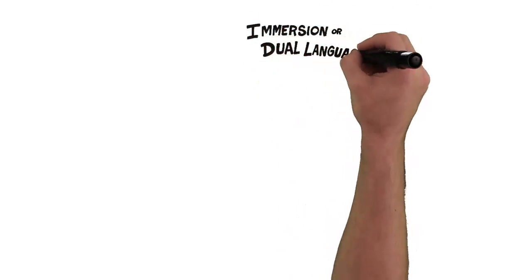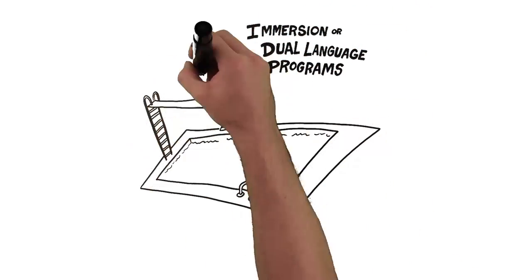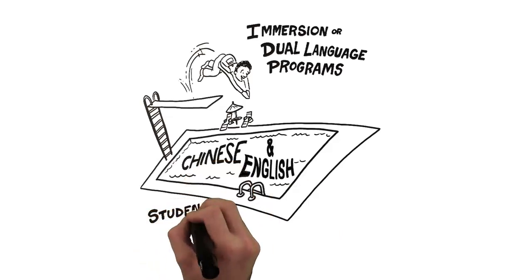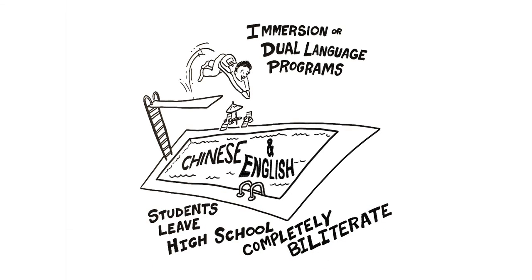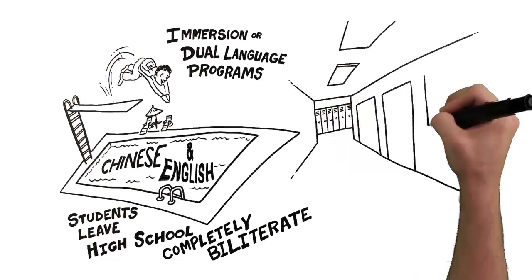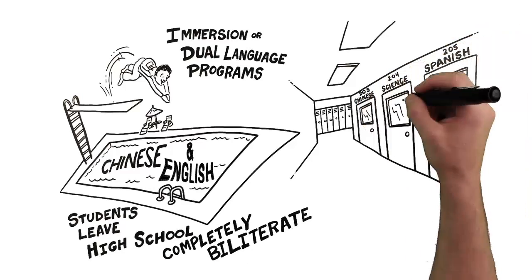Then there are immersion or dual-language programs. The goal of these programs is for students to leave high school completely biliterate. And of course, some traditional schools teach second languages as one of many academic classes.